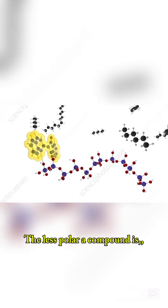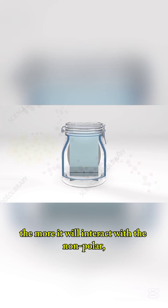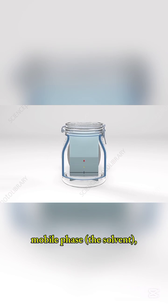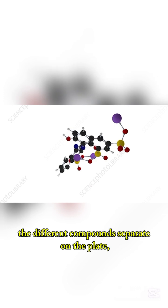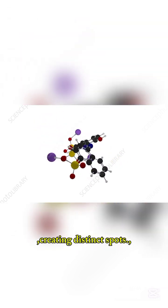The less polar a compound is, the more it will interact with the non-polar mobile phase, the solvent, and move faster. As a result, the different compounds separate on the plate, creating distinct spots.